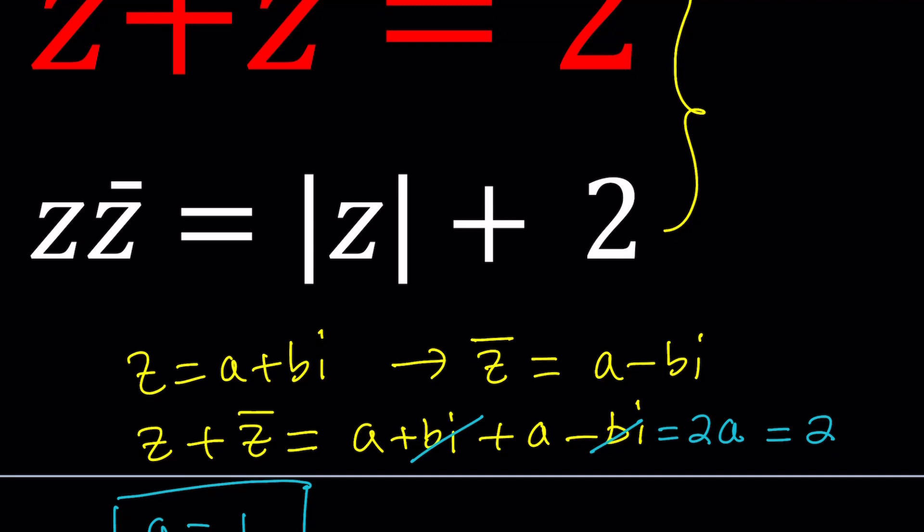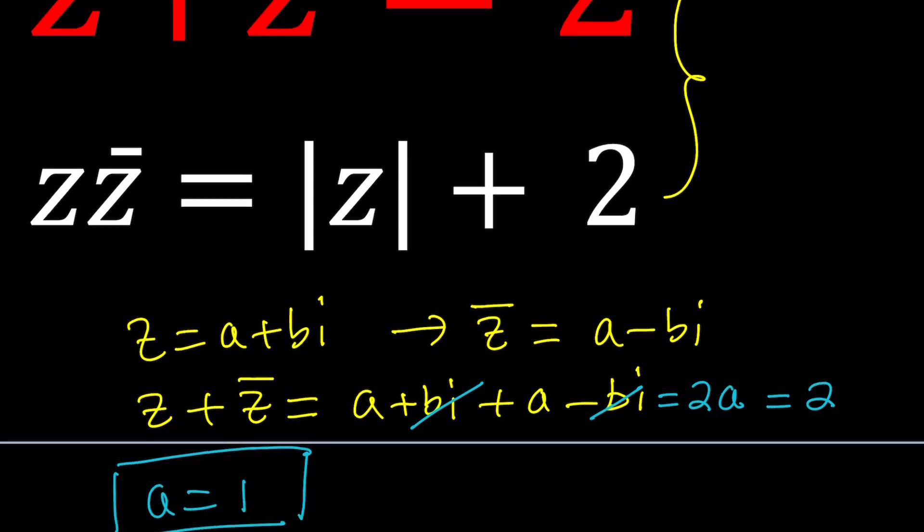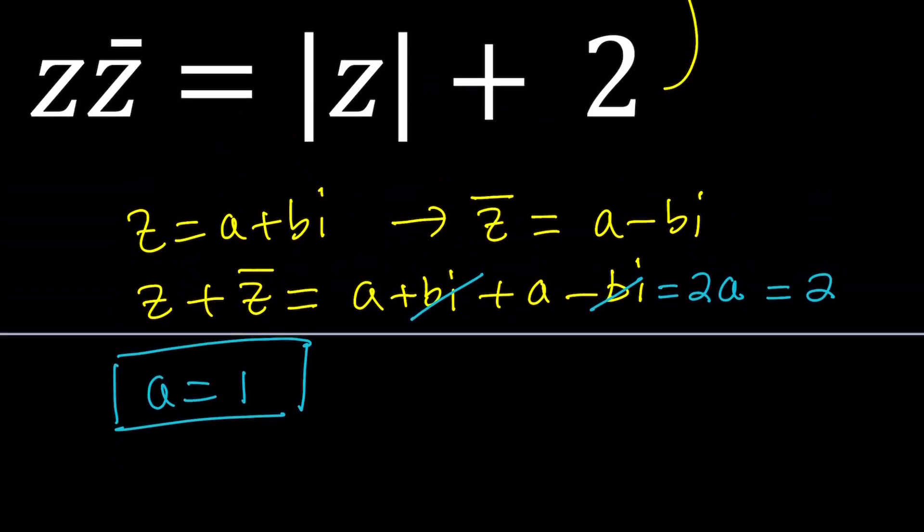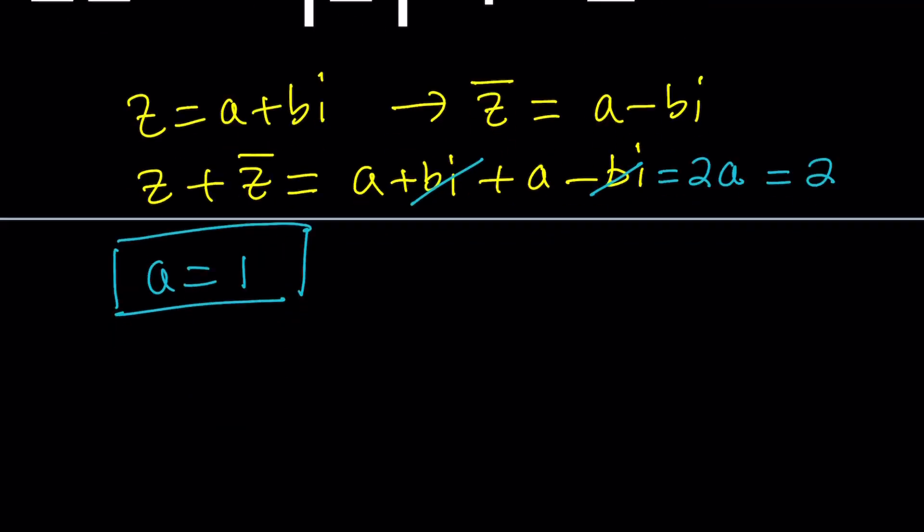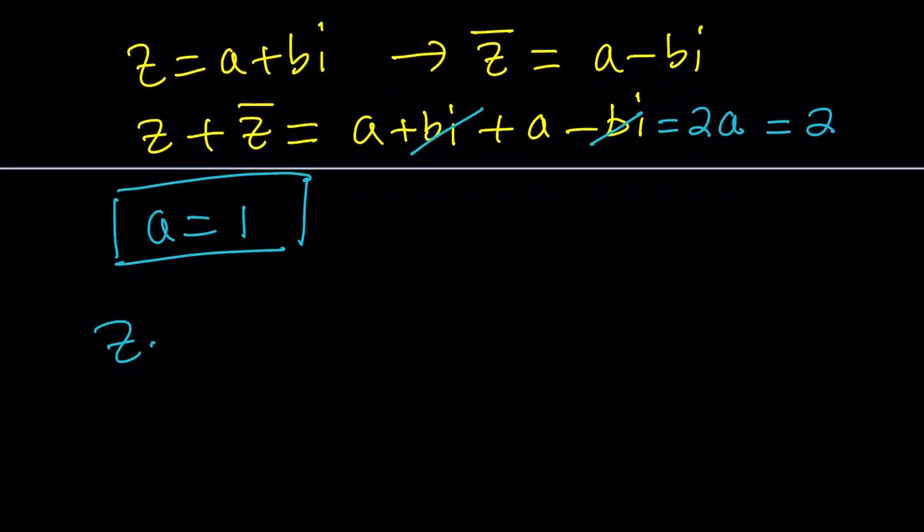What about the product? Product is more interesting, of course, because if z is a plus bi and z bar is a minus bi, their product is always a real number. We talked about it in the lecture notes and in some problems. So this is always equal to the sum of two squares, a squared plus b squared. What about the absolute value? Well, the absolute value is just the square root of a squared plus b squared. So aren't these related? Of course they are.